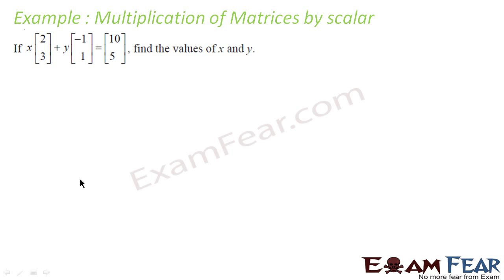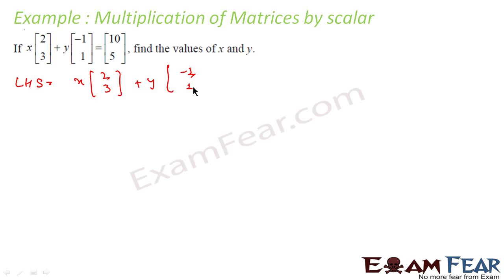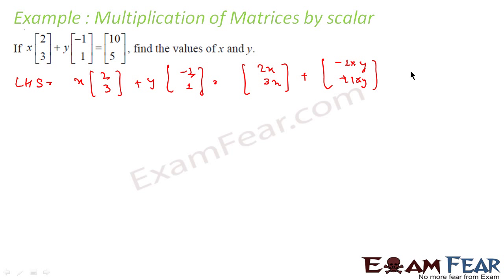Let's take one more example. Very similar to the previous one — the left-hand side is a little complex, and the right-hand side is a simple matrix. So we convert the left-hand side into a single matrix and then compare. Starting with simplifying the LHS: x into [2 3] plus y into [−1 1]. This becomes [2x, 3x] plus [−y, y], which gives [2x−y, 3x+y].